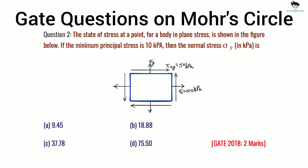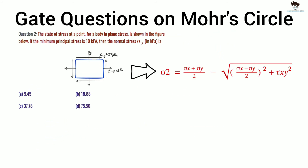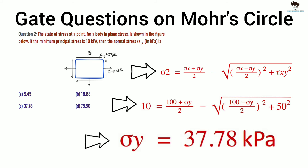The next example is from GATE 2018. The state of stress at a point for a body in plane stress is shown. If the minimum principal stress is 10 kPa, find the normal stress sigma y in kPa. Writing down the minimum principal stress formula and substituting the known values, we solve for the unknown sigma y. The answer is sigma y = 37.78 kPa.